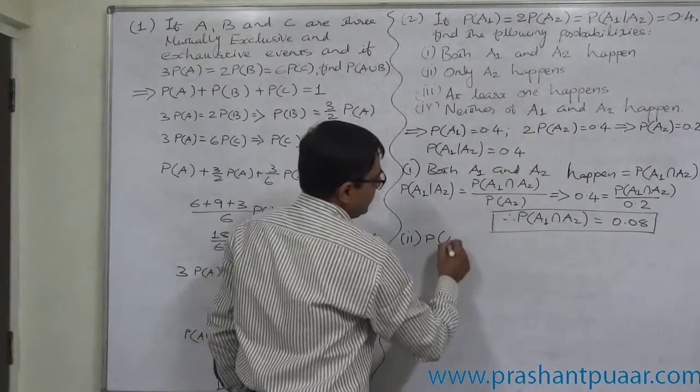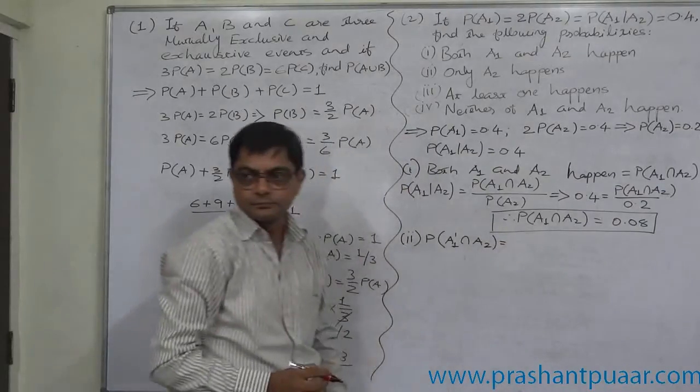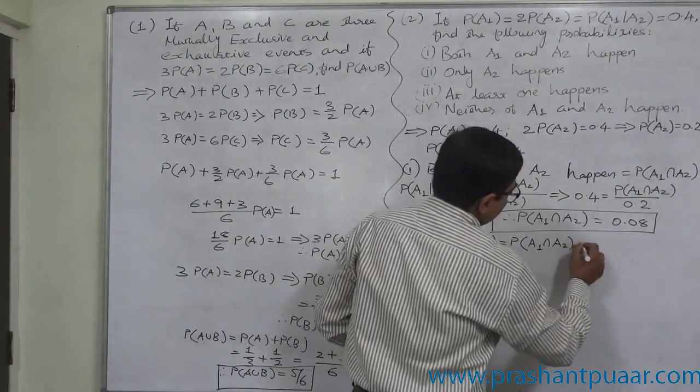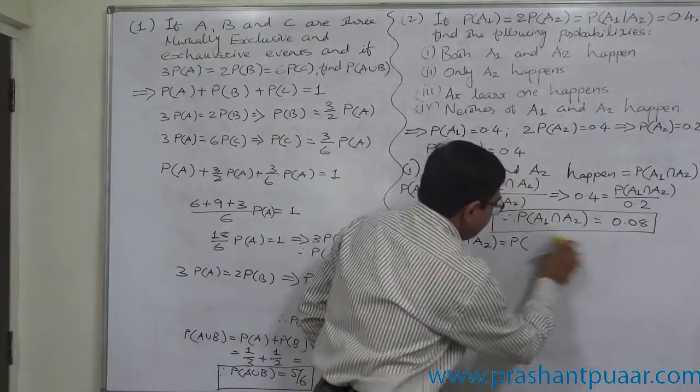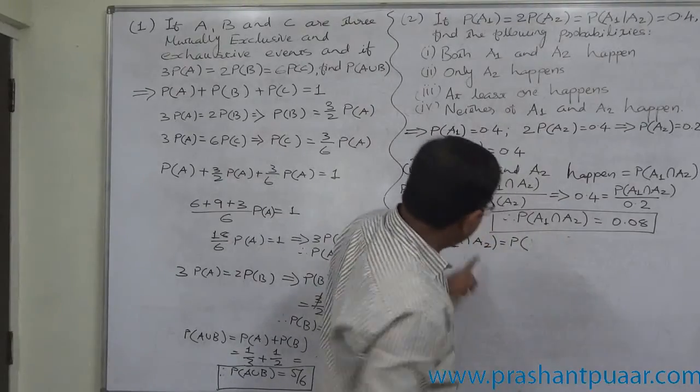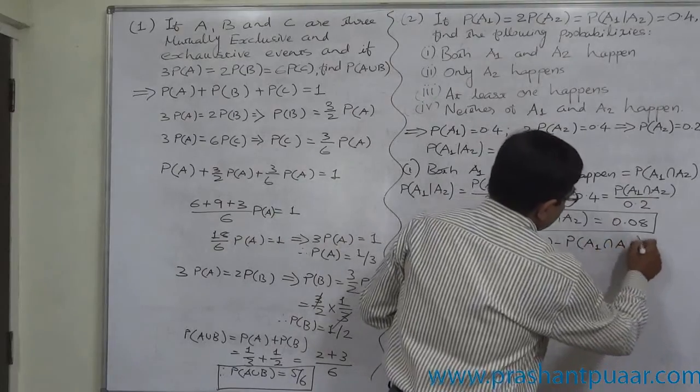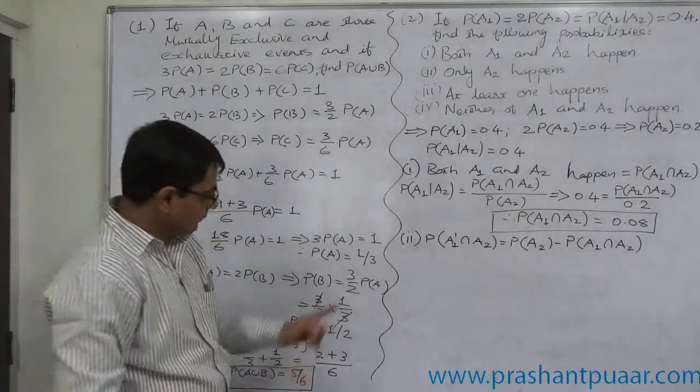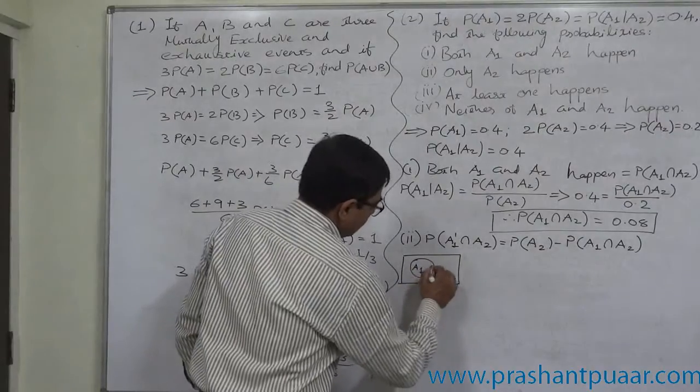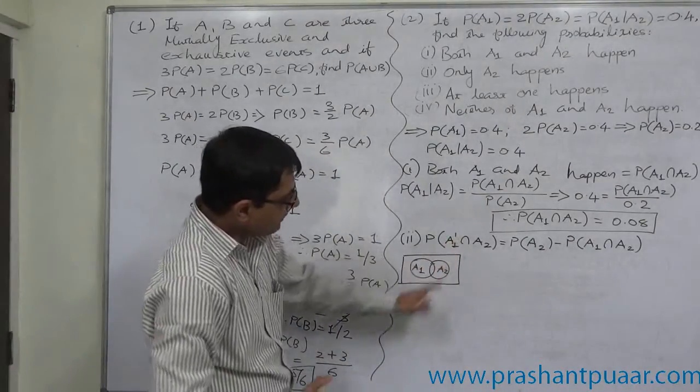So this is the case of probability of A1 complement intersection A2. What is the formula? P of A1 complement intersection A2 equals P of A2 minus P of A1 intersection A2. Why? Consider the Venn diagram. This is A1, this is A2, and this is A1 intersection A2.